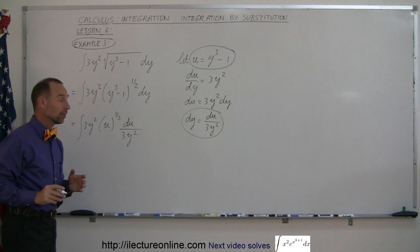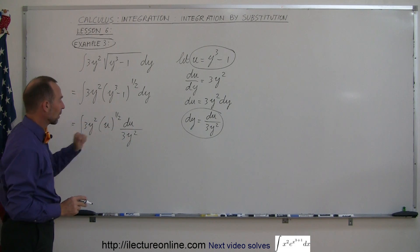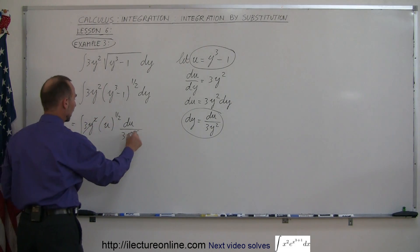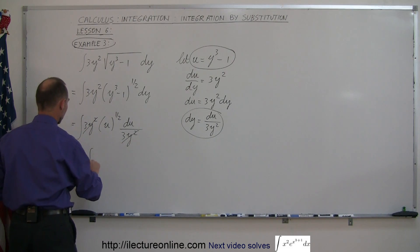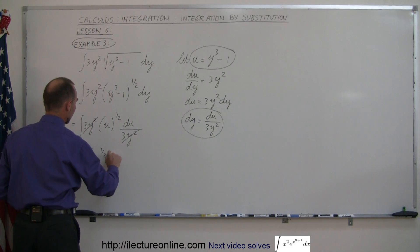And just as I predicted, the 3y squared in the numerator will cancel out with the 3y squared in the denominator and then we're simply left with the integral of u to the 1 half power du.